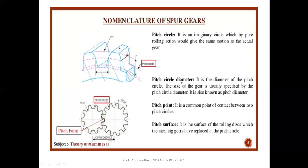The pitch circle diameter (PCD) is the diameter of the pitch circle for the gear and pinion, and the size of gears is usually specified by this PCD. The pitch point is the meeting point of the pitch circle of the pinion and the pitch circle of the gear — wherever they meet, that point is called the pitch point.